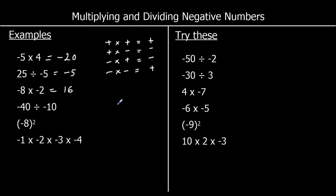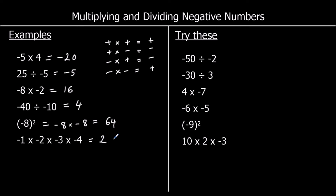The fourth one: negative divided by a negative, so positive. 40 divided by 10 is 4. Negative 8 squared means negative 8 times negative 8 — a negative times a negative is a positive, and 8 times 8 is 64. Finally, negative 1 times negative 2 times negative 3 times negative 4. Negative 1 times negative 2 is positive 2. Negative 3 times negative 4 is positive 12. So we've got 2 times 12 — a positive times a positive is positive — which is 24.